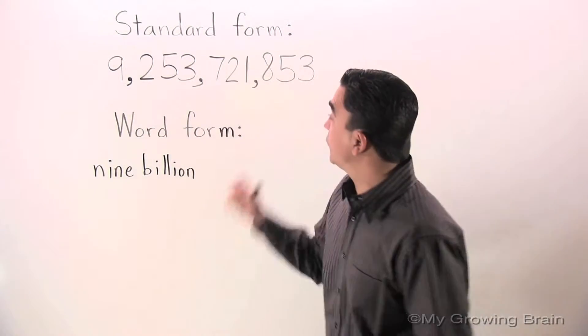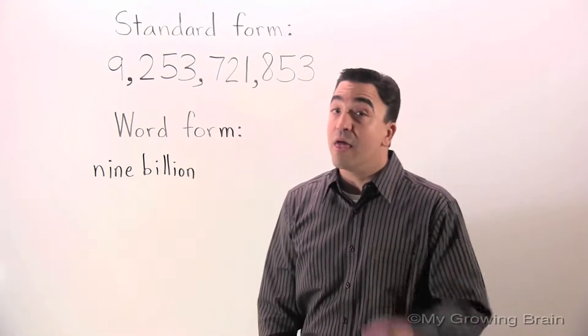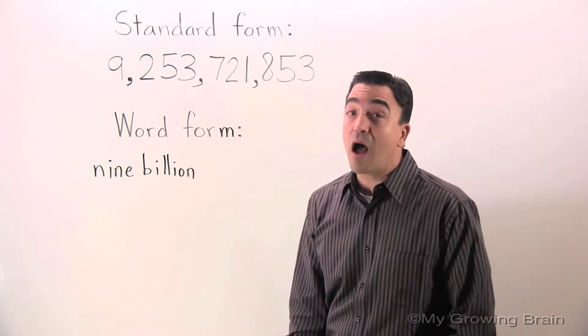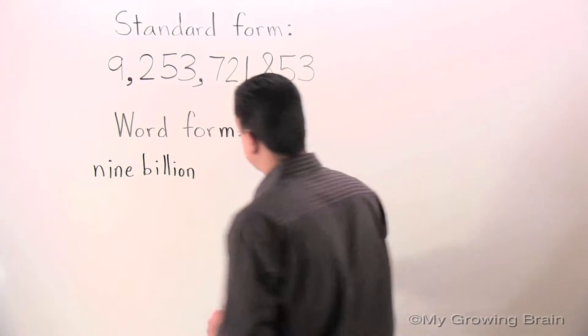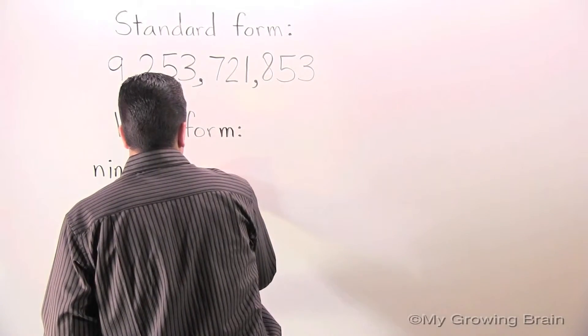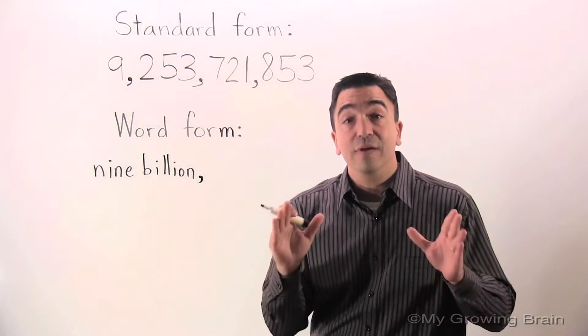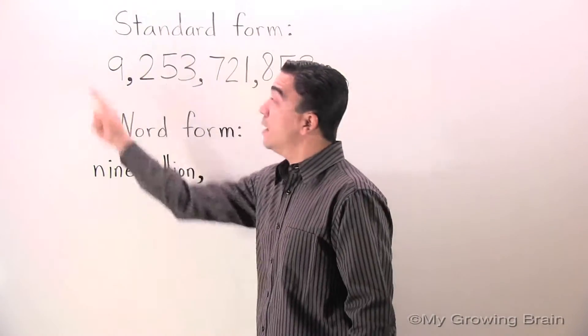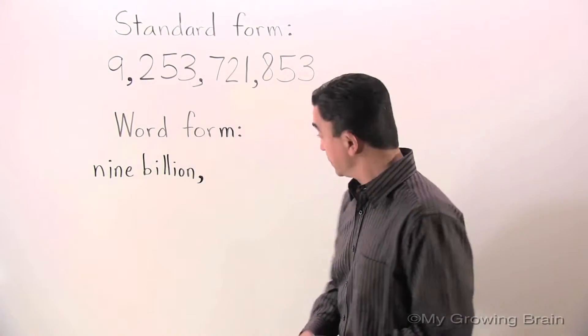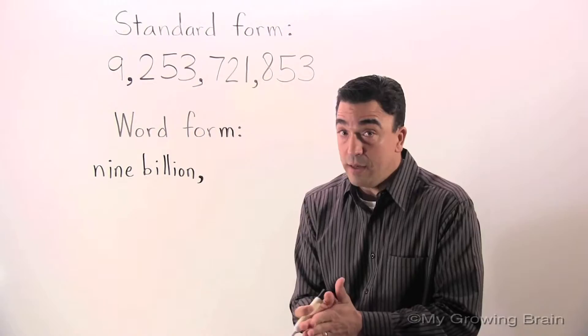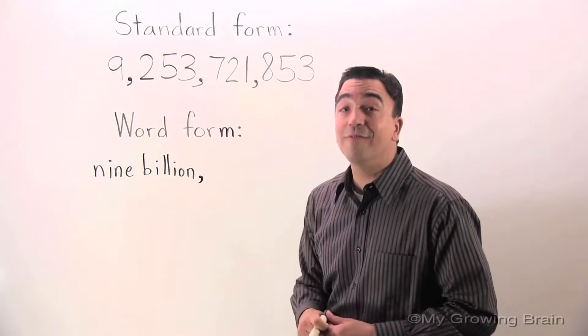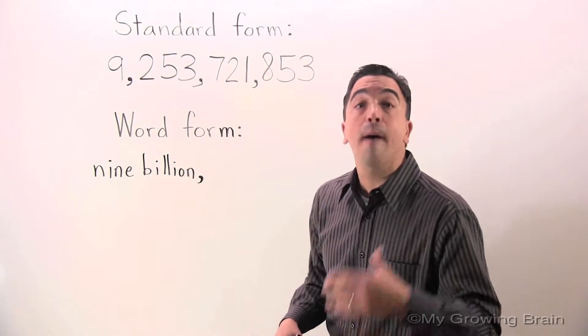Now please remember, in standard form we have a comma. Therefore, we also need a comma in word form. Next step, we're going to go to the millions period. Are you ready? 253 million.